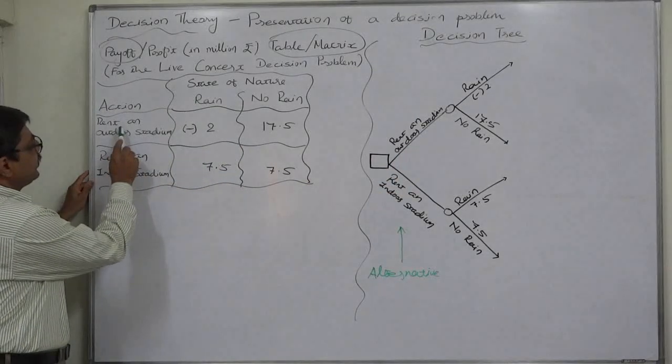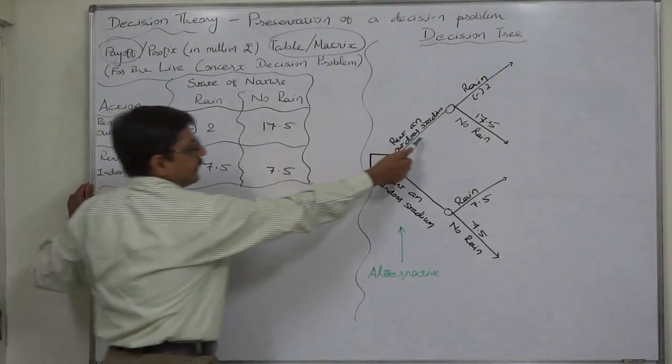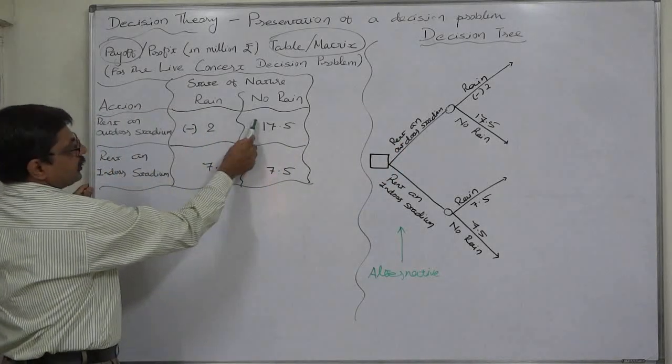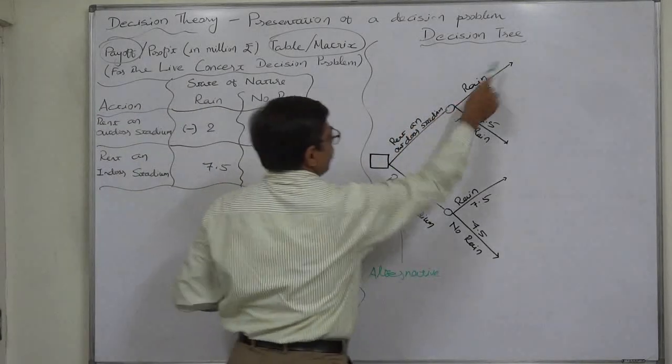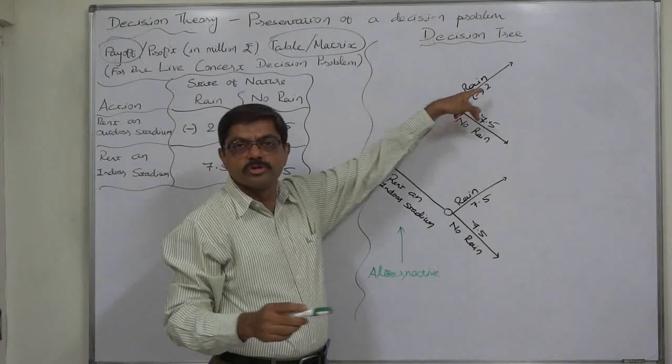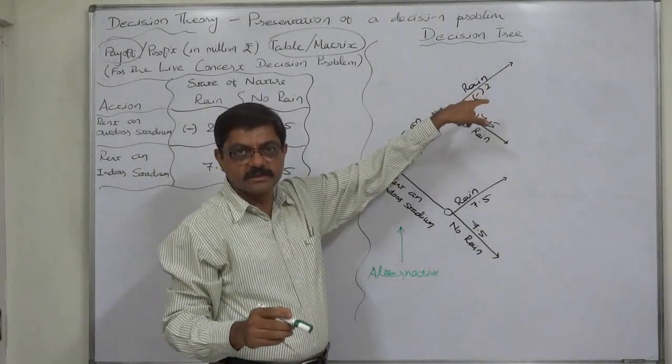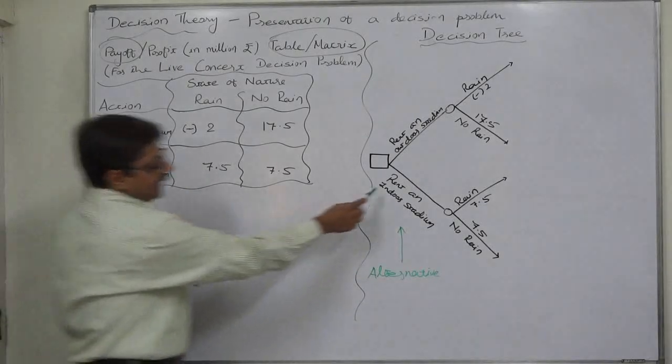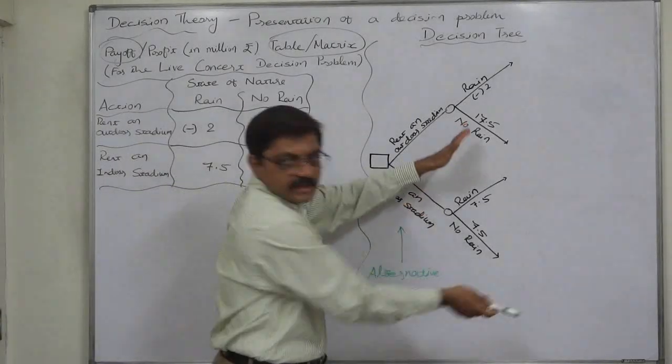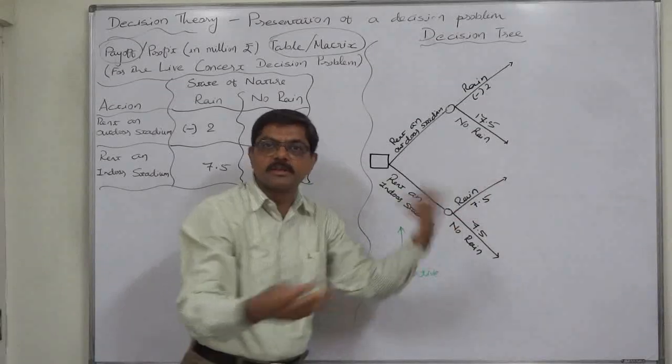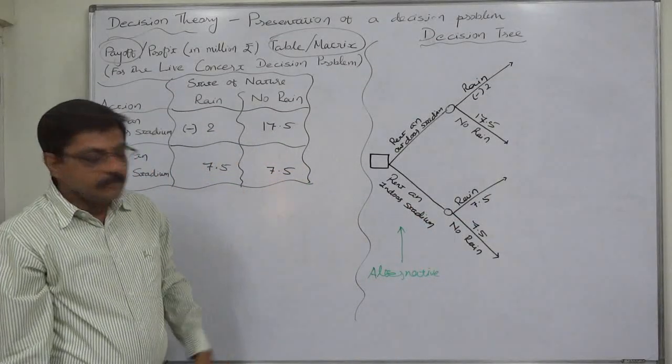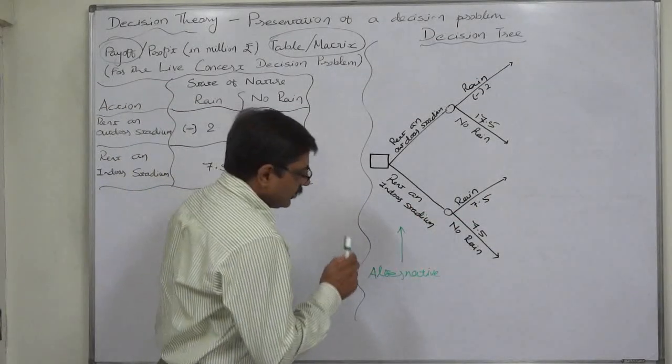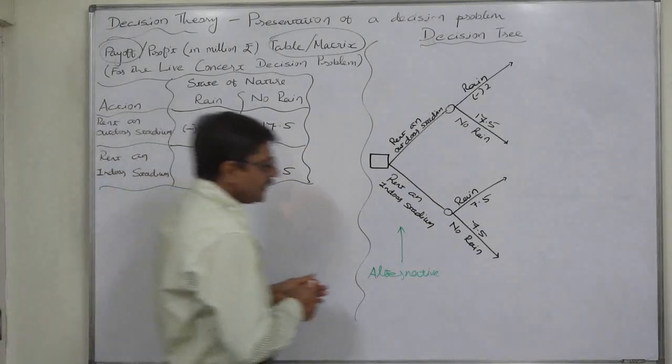We can see that rent an outdoor stadium, there are two possibilities rain or no rain. These are two mutually exclusive exhaustive states of nature. Similarly another alternative is rent an indoor stadium and again there are two possibilities, there will be rain or there will not be rain.